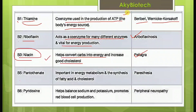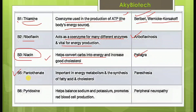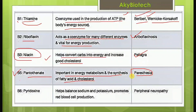The deficiency of which vitamin causes which disease is frequently asked in examinations. Vitamin B5 is pantothenate — it is important in energy metabolism and the synthesis of fatty acids and cholesterol. Deficiency of vitamin B5 leads to paresthesia.